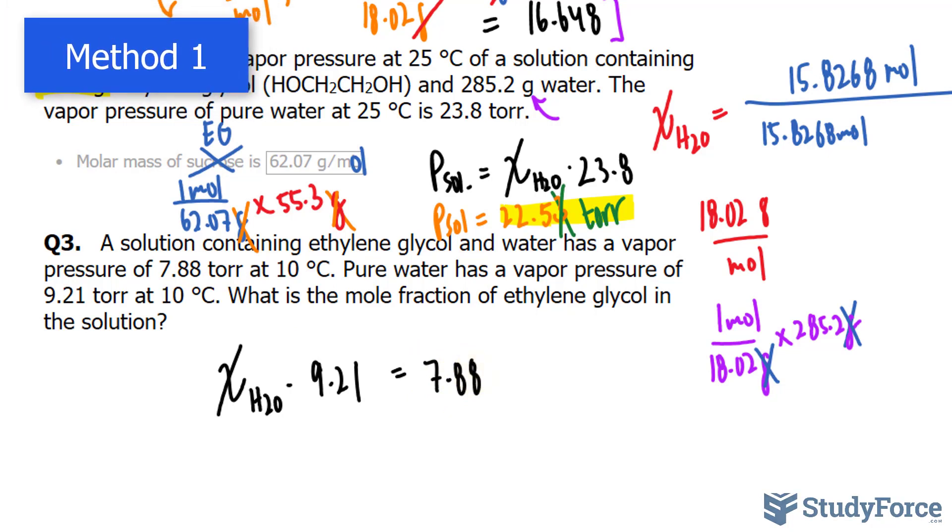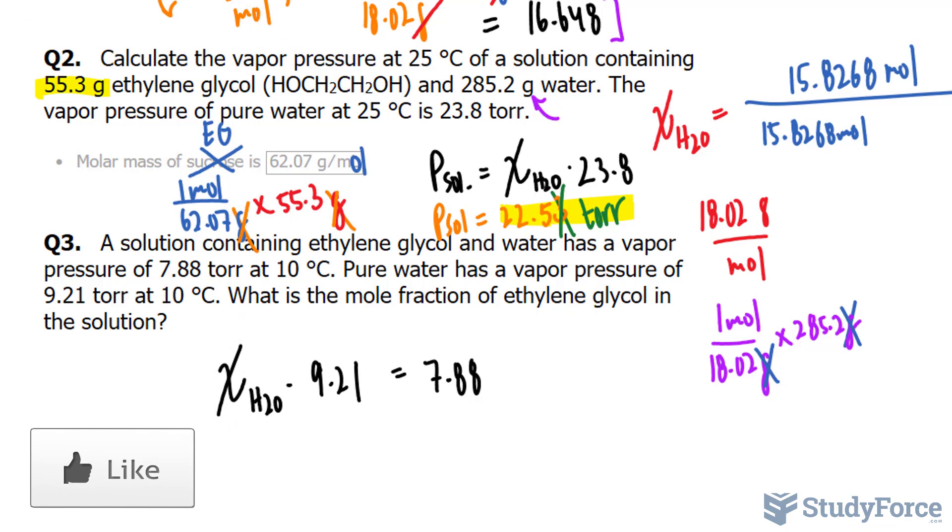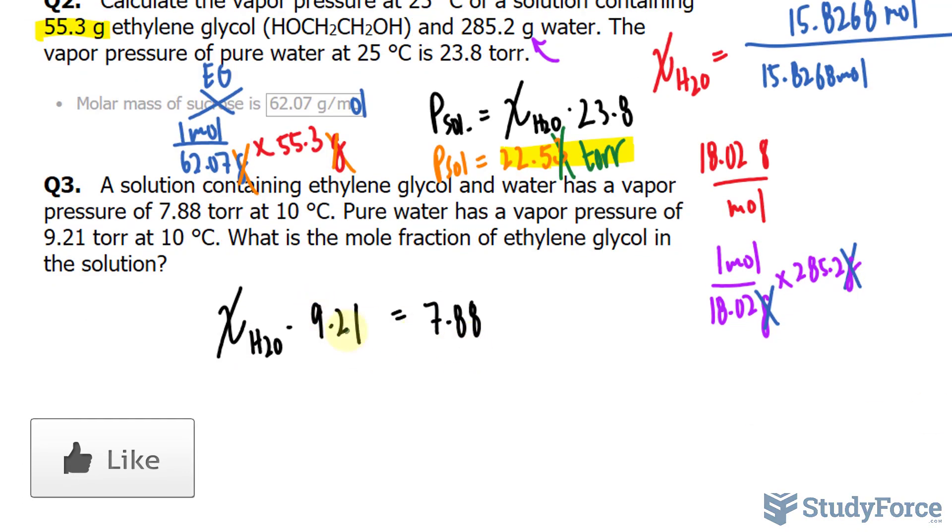At this point, we can easily solve for the mole fraction of the solvent. But instead what I'm going to do is subtract 9.21 from 7.88. That will give us the difference in the pressures. So 9.21 minus 7.88 gives us 1.33 Torr. That's the difference in the vapor pressure after the solute was applied to the water.